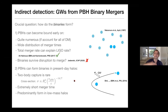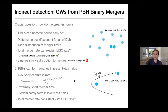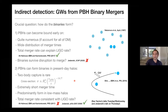These predominantly form in low-mass halos because the velocity dispersion is smaller there. The question is whether the total merger rate is consistent with the LIGO rate. In our paper, we found that it isn't quite enough to explain the LIGO rate, but this has been reviewed and there are suggestions that perhaps it might explain it. We'll hear more from the relevant people this week.